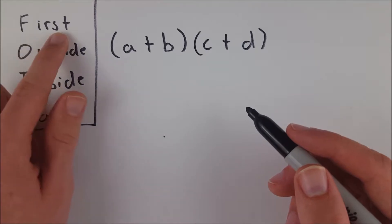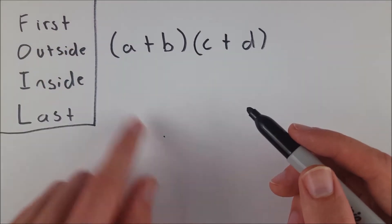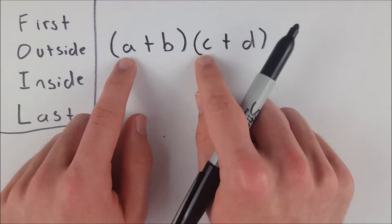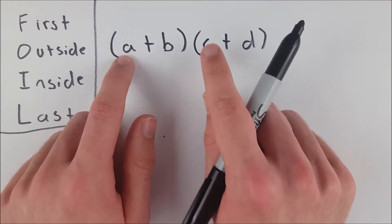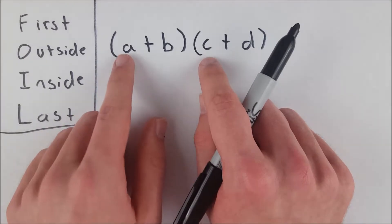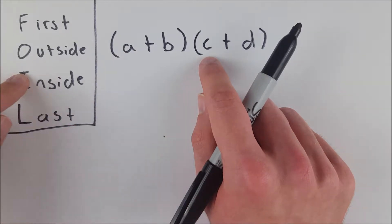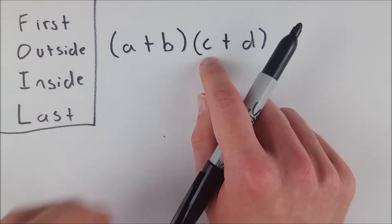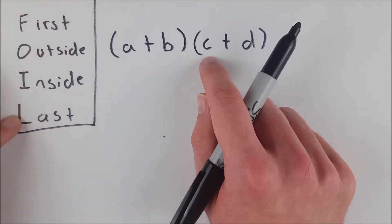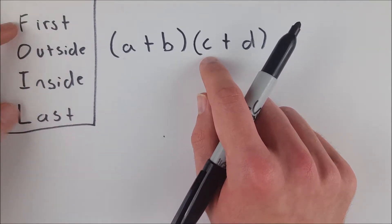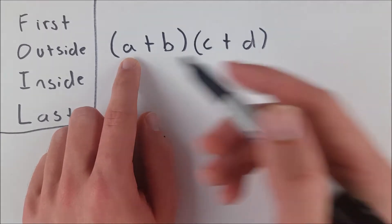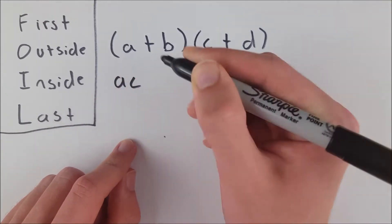The F in FOIL tells us that the first thing we need to do is multiply our first terms, so a times c. I should point out that order doesn't matter. We can do inside, outside, first, last. It doesn't matter, but we put it in this order because it's easy to remember—it's actually a word. So we do a times c to get the product ac.